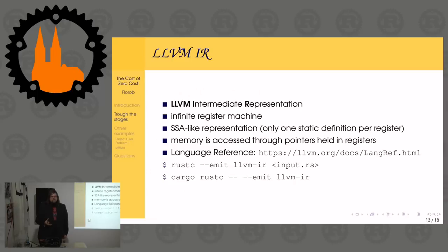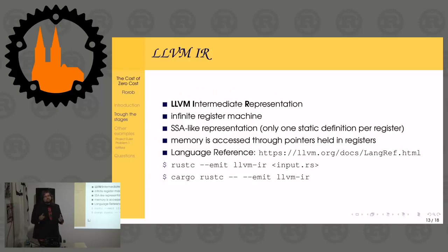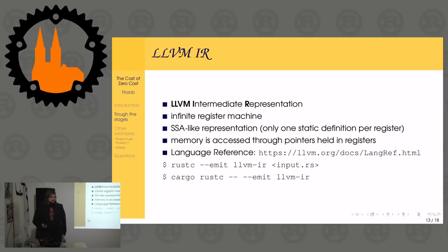This is what makes LLVM IR not strictly SSA form - you can put variables in memory and redefine them. Optimizations move variables between memory and registers and vice versa. To get LLVM IR, pass `--emit=llvm-ir` to rustc (works in stable Rust), and it gives you an `.ll` file.